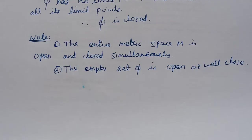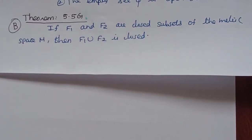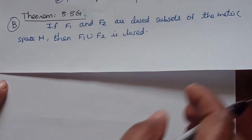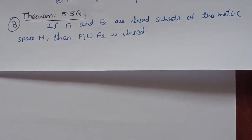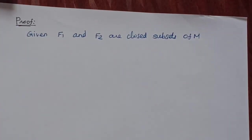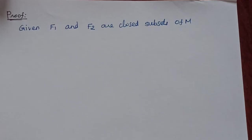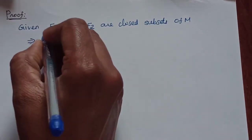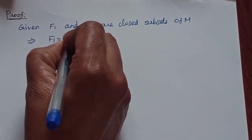The next theorem is Theorem 5.5G: if F1 and F2 are closed subsets of the metric space M, we can prove that their union is also closed. Since closed subsets contain all their limit points, we can say that F1 equals F1 closure, and similarly F2 equals F2 closure.